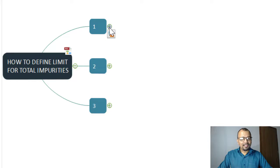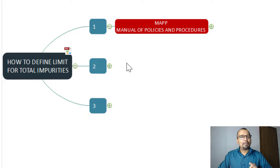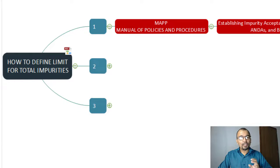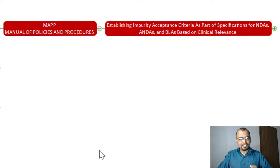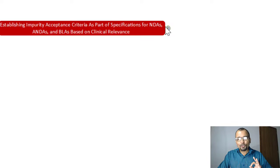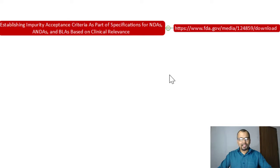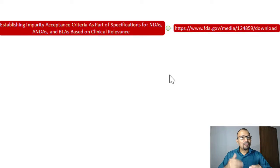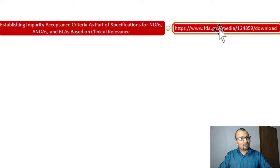Let us now understand how to define the limit for total impurities using the MAPP — the Manual of Policies and Procedures. The name of the MAPP is: "Establishing Impurity Acceptance Criteria as Part of Specifications for NDAs, ANDAs, and BLAs Based on Clinical Relevance." I strongly recommend you go through this guideline very thoroughly. I will also provide the link in the description so that you can easily access this important document.